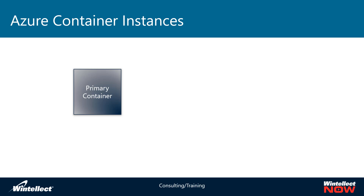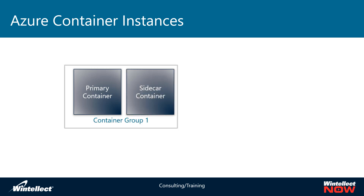A single container can be used alongside a sidecar container in something called a container group. A container group is basically the analog to a pod in the Kubernetes context. So you can have a principal container running in that group and then use a sidecar container that might be a backend container, a logging or monitoring container, or something along those lines. The container group is what gives you the ability to put those containers together and deploy them as a single unit.